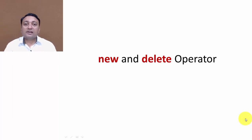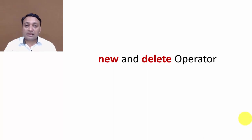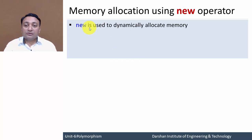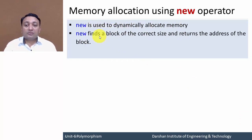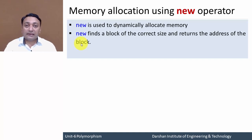In this lecture we are going to discuss the new and delete operators, which are used to allocate and de-allocate memory dynamically, or we can say allocate and de-allocate memory at runtime. New is used to dynamically allocate memory — it finds a memory block of the correct size, returns the address of that block, and we store that address in a pointer variable.